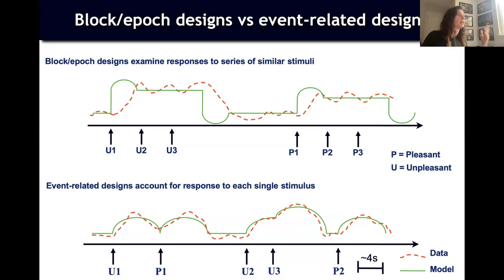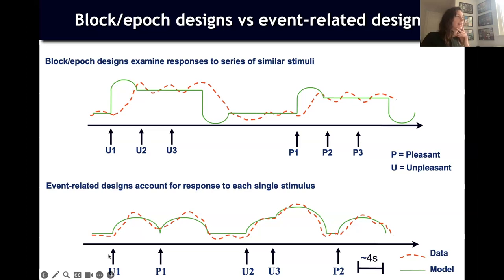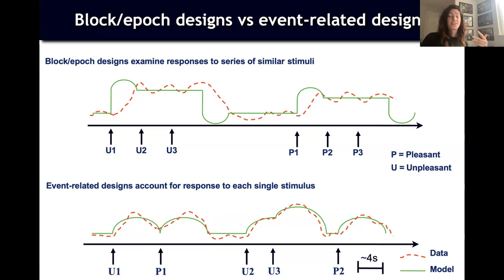This is how it was done classically. Later, people realized that if you know enough about how the BOLD response function looks like and how your events are organized, you can probably model them individually. You can present stimuli in different orders at different stages and model the response to each stimulus separately. That is essentially the main difference between a block design and an event-related design.